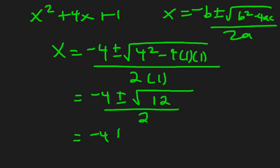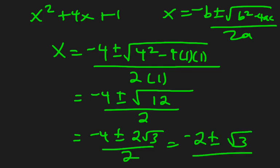Negative 2 plus or minus, negative 4 plus or minus. This guy breaks up into 4 times 3, so 2 root 3 all over 2. So my final answer here for this guy is negative 2 plus or minus root 3. So that gives me my other two solutions.